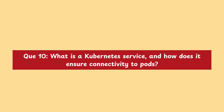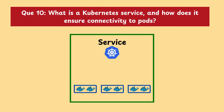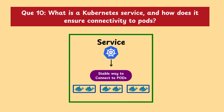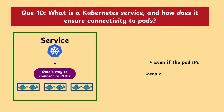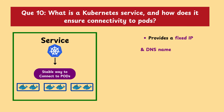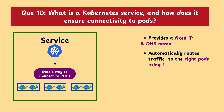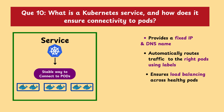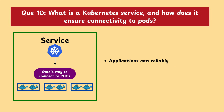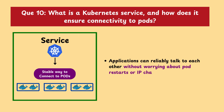What is a Kubernetes service and how does it ensure connectivity to pods? A Kubernetes service is a stable way to connect to pods, even if the pod's IP keeps changing. It acts as an abstraction layer that provides a fixed IP and DNS name, automatically routes traffic to the right pods using labels, and ensures load balancing across healthy pods. This way, applications can reliably talk to each other without worrying about pod restarts or IP changes.